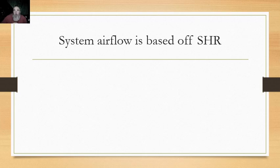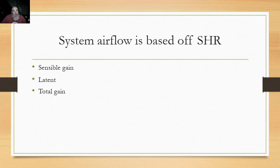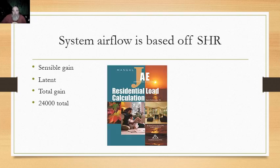Your airflow is supposed to be based off of your sensible heat ratio. We look at our sensible gain, we look at our latent gain, we look at our total gain. Our total gain was 24,000 BTUs. Where did we get that? We used ACCA's Manual J. That simple.